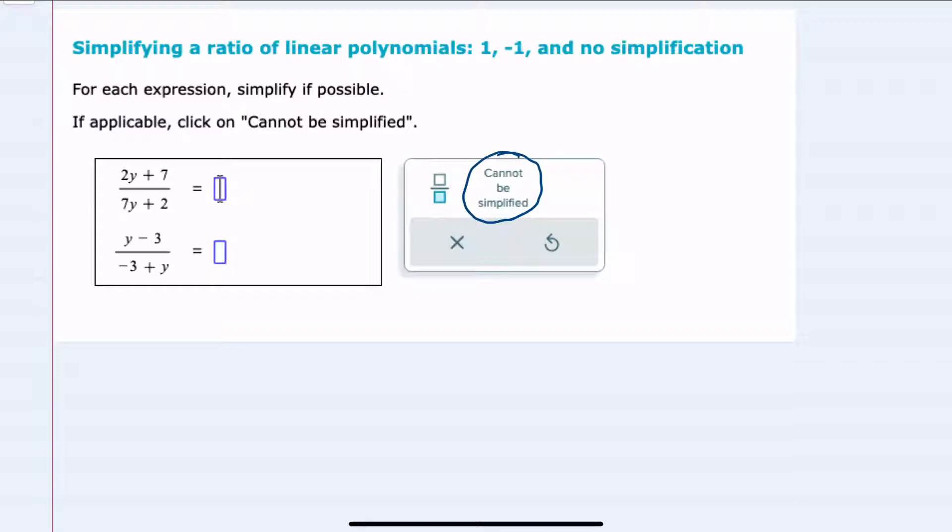For the bottom expression, I have y minus 3 and then negative 3 plus y. And here again, there's nothing that I can factor out of each one. However,